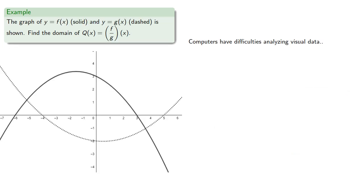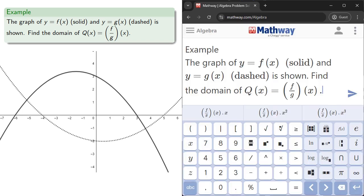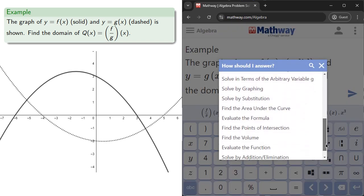On the other hand, computers have difficulties analyzing visual data, while humans are good at it. So computers have a hard time with this version of the problem, but humans find it easy if they understand what they're looking for.